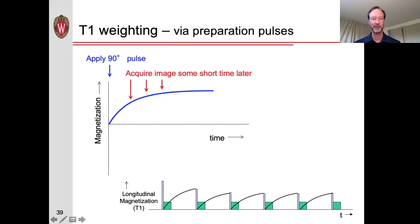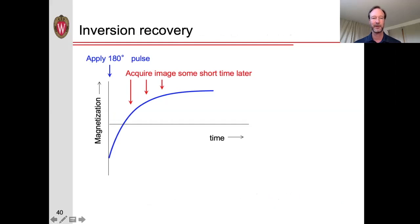Another way to accentuate that contrast is what we call inversion recovery. That is, instead of acquiring or sending in a 90-degree pulse initially, we can apply, initially, a 180-degree pulse. So what that does is it flips the magnetization from being perfectly vertical to being exactly opposite. Then that magnetization recovers along that axis and slowly relaxes back.